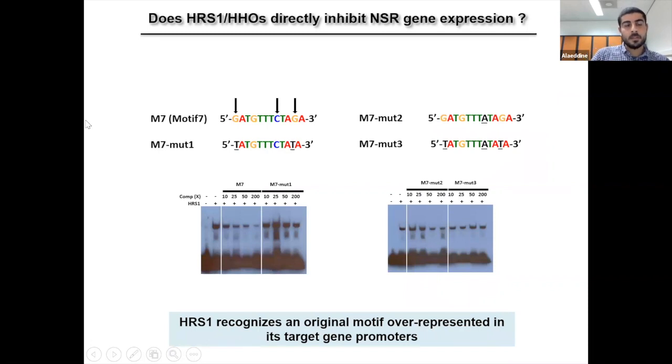So using gel shift, we proved that HRS1 binds an oligonucleotide sequence formed by four times repetition of this motif. And with increased concentration of the non-labeled oligos, we showed that the cold DNA sequence competes with the labeled one and that this binding is specific. And to go further into the details of this binding, we decided to mutate the most conserved residues, which are these two guanines and this cytosine.